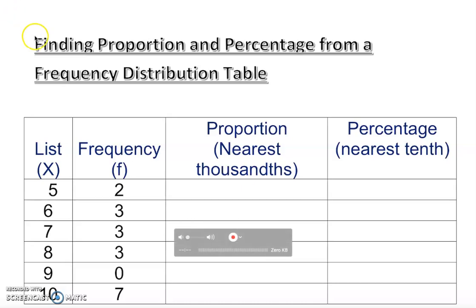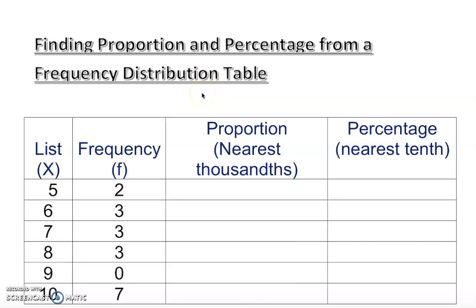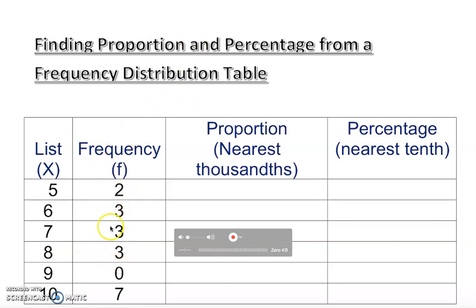Welcome back. We're going to find proportion and percentage from a frequency distribution table. Last video we constructed a frequency distribution table given a big data set with about 39 numbers. We constructed it starting with the minimum and ending with the maximum, crossing out numbers and finding the frequency.